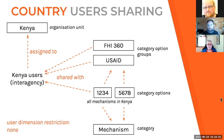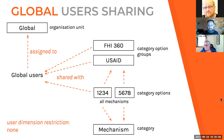Country users have all mechanisms in Kenya shared with them, all applicable category option groups shared with them, and are assigned to the Kenya organization unit — with no user dimension restrictions, so they're only restricted by their organization unit. Global users are assigned to the global organization unit, have all mechanisms and all category option groups shared with them, and have no user dimension restrictions or organization unit restrictions at all.